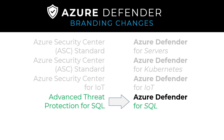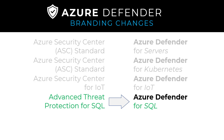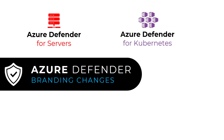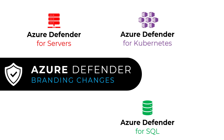So we see a unification in the naming there. These are the same functions — they're always evolving, but you see the unity in the naming. To visualize that: you've got Azure Defender for Servers, Azure Defender for Kubernetes, Azure Defender for SQL, and Azure Defender for IoT.